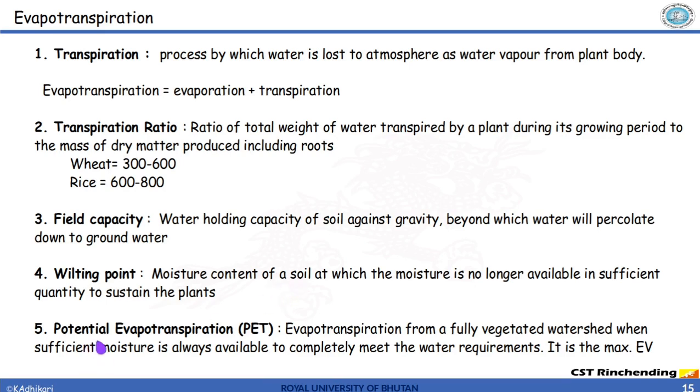The next term is potential evapotranspiration. In very straight terms it is the maximum evapotranspiration. As a definition, it is the evaporation from a fully vegetated watershed when sufficient moisture is always available to completely meet the water requirement. It is the maximum evapotranspiration and this is what is actually being calculated by an irrigation engineer.